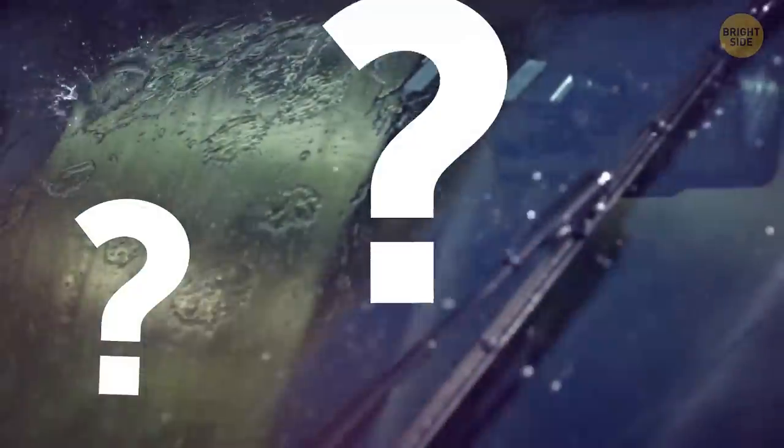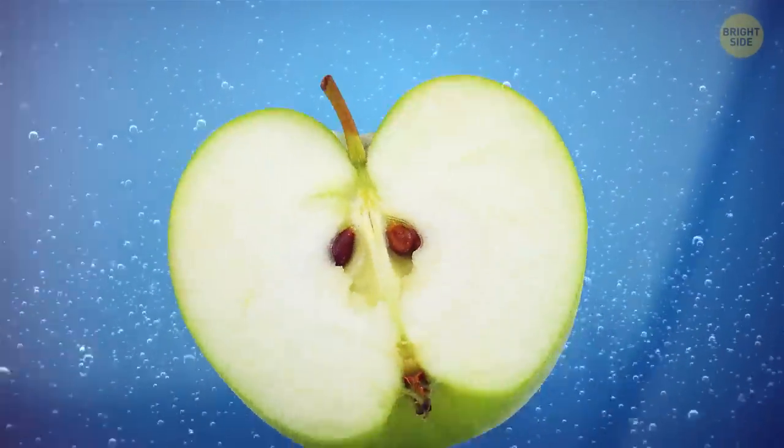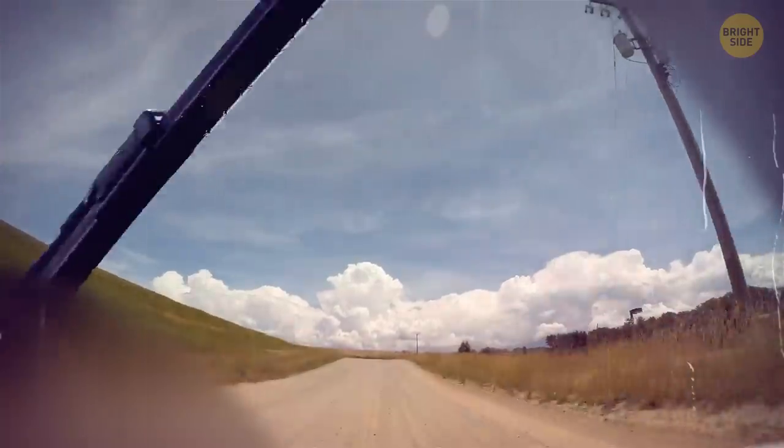Is your windshield wiper not working so great? Or maybe the rain doesn't run off the glass efficiently? Cut an apple in half and rub it over the windshield. Then watch the apple work its magic. Water will slide off the glass with ease.